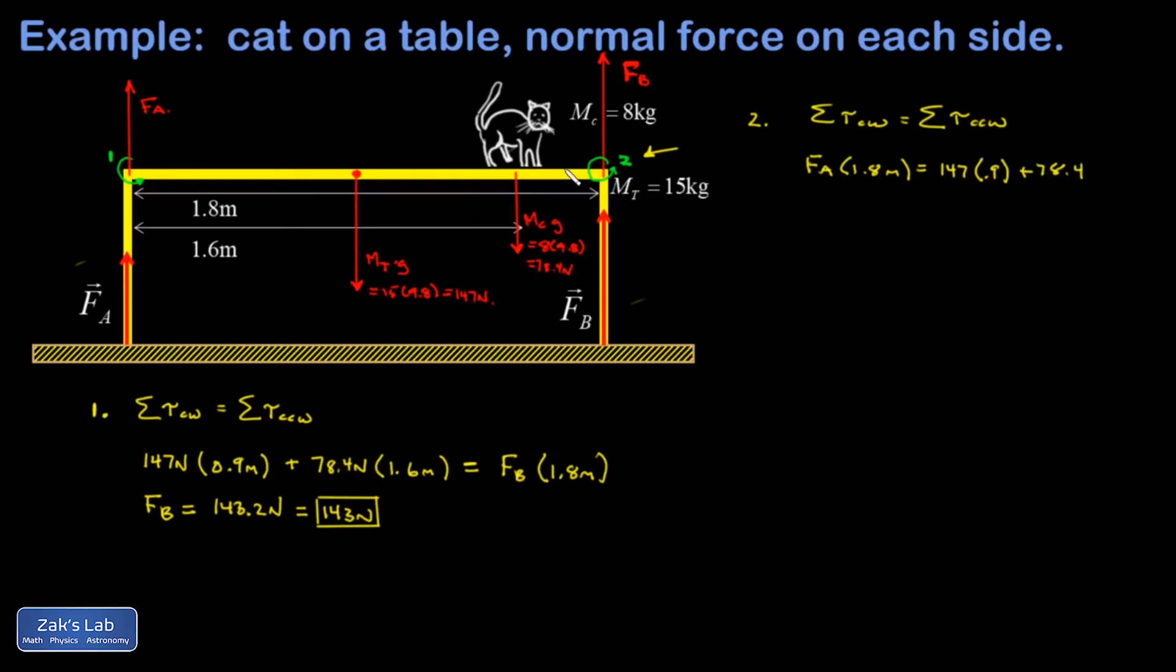And then I have to do a little math to figure out how far is the cat from the end. Well, the table is 1.8 meters long. The cat's at 1.6 from the left end, so it's at 0.2 meters from the right end. I crunch it all in my calculator, and I find F_A. And I get 82.2 newtons for that. Okay, so the problem is solved.